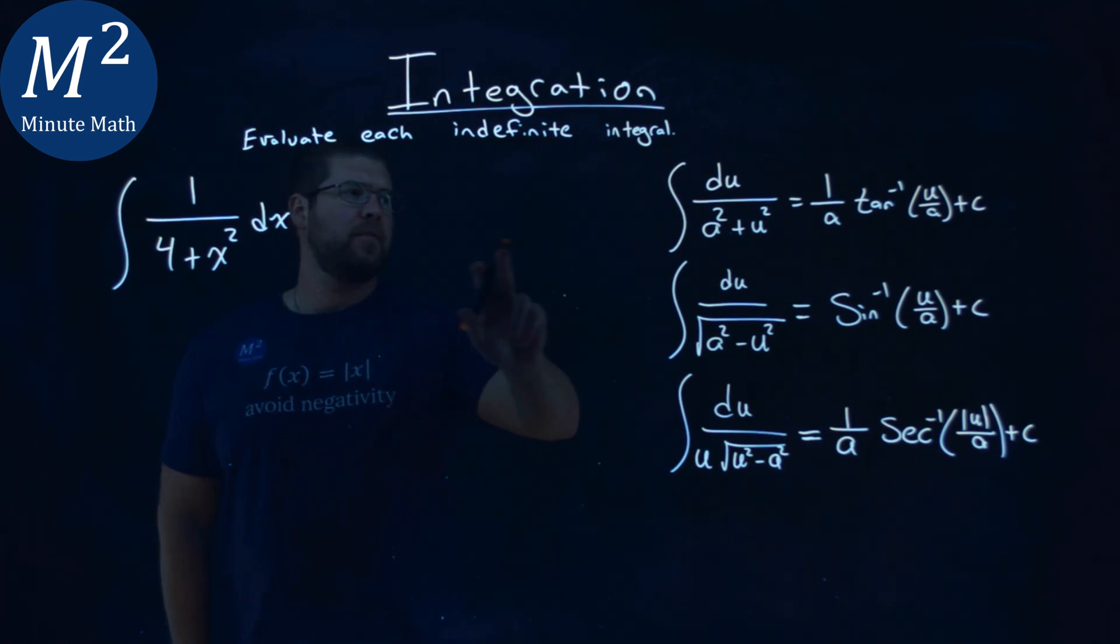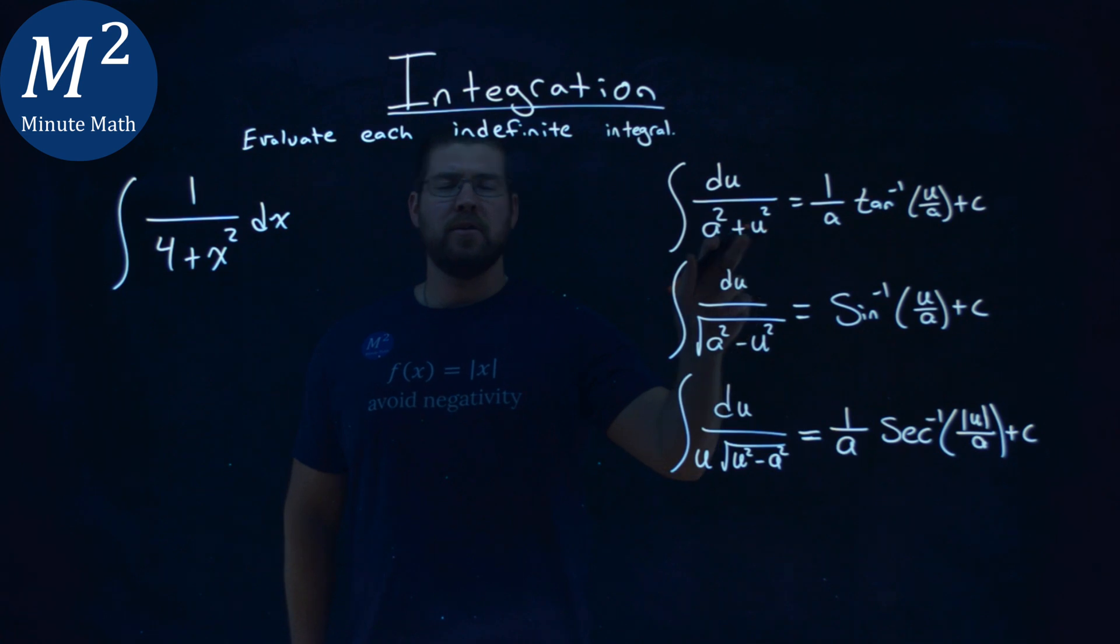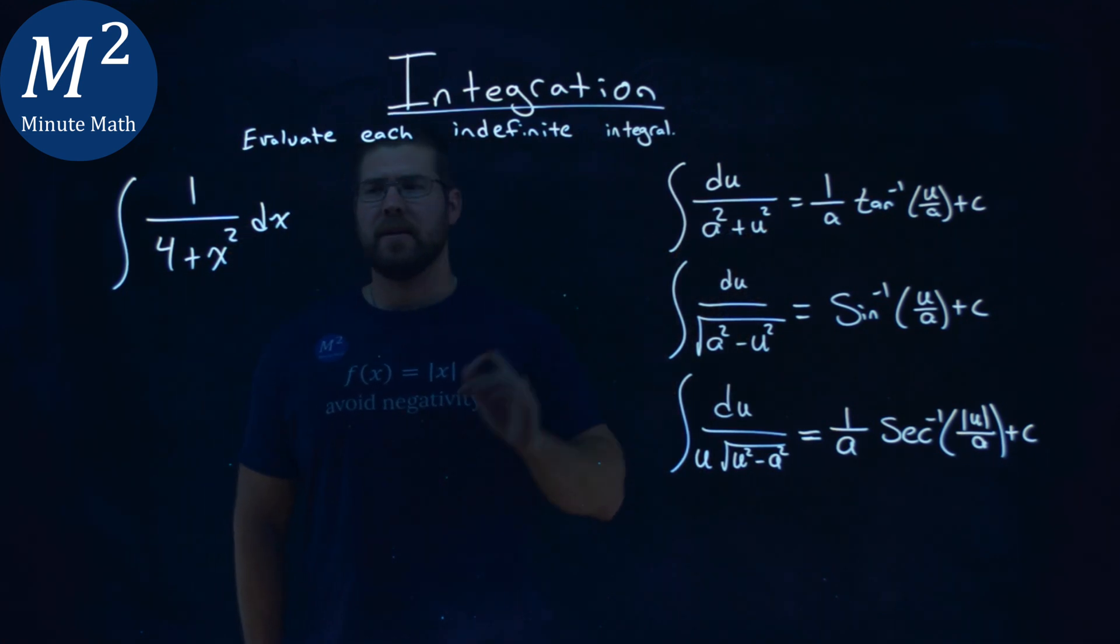And the one I'm kind of gravitating towards is the arctangent one. We have an a and a u, and they're squared right down there.